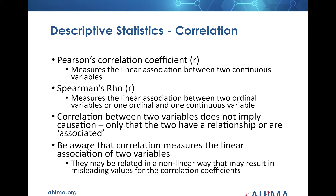Now we're looking at correlation — the strength of these two relationships. With Pearson's coefficient, it's measuring the linear association between two continuous variables. In other words, if we were to graph two variables, are all the dots tightly clustered around a line, or is there really no relationship? That's really what we're looking at here.